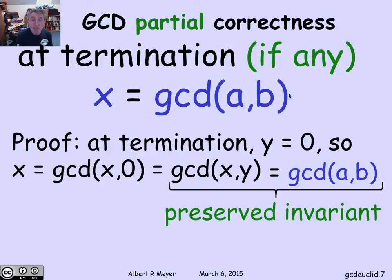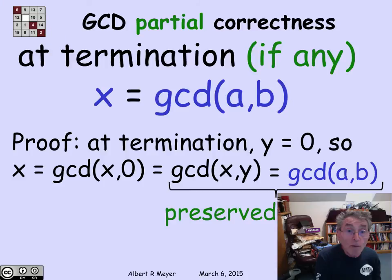So I've proved this little fact. This procedure correctly computes the GCD of a and b, leaving the answer in register x if it terminates. Of course it terminates, and it terminates fast.